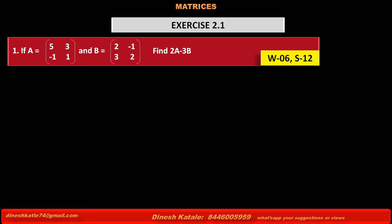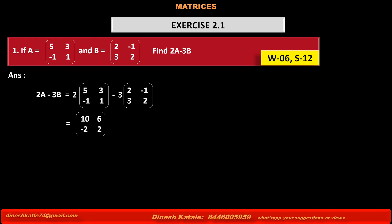See answer: 2A minus 3B is equal to 2 into matrix A [5, 3; -1, 1] minus 3 into matrix B [2, -1; 3, 2]. We begin by multiplying matrix A by scalar 2.